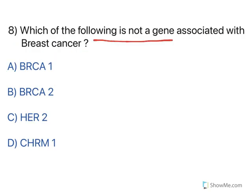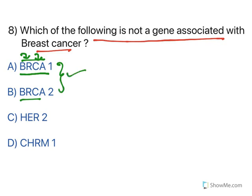Which of the following is not a gene associated with breast cancer? BRCA stands for breast cancer — BRCA1 and BRCA2 are both related to breast cancer. HER2 (human epidermal growth factor receptor) is also involved in breast cancer. However, CHRM (cholinergic receptor muscarinic) is responsible for the muscarinic receptor and is not involved in cancer, making option D the correct answer.